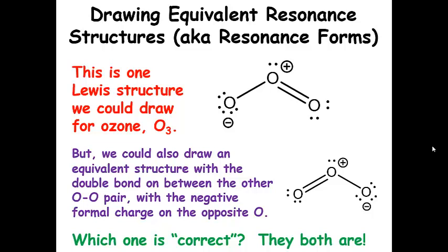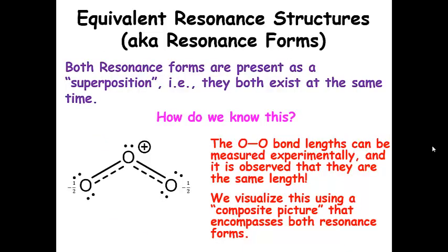Which one is technically correct? Well, the answer is that they both are. Both of these resonance forms are present as a superposition — they both exist at the same time. We can also call them an average, a hybrid, or a composite. Here's a composite structure that shows you what that looks like. We have our oxygen atoms, and we have the delocalized lone pair included as this hashed line, showing a partial bond on each side.